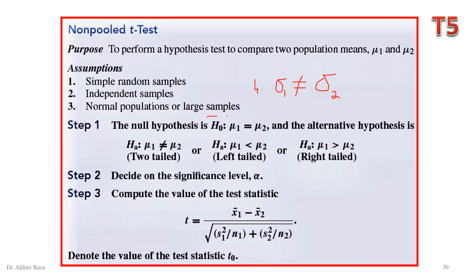The null hypothesis is the same: mean 1 is equal to mean 2. In the alternate hypothesis, we have three options: the two means are not equal (two-tail test), mean 1 is less than mean 2 (left-tail test), or mean 1 is greater than mean 2 (right-tail test).